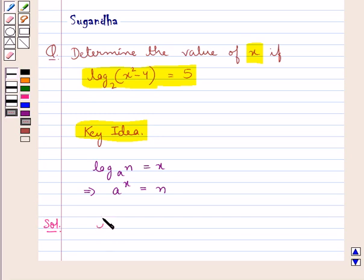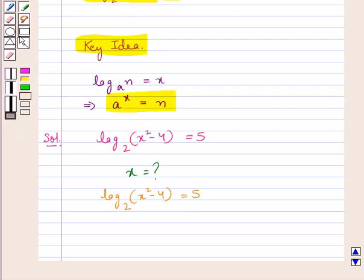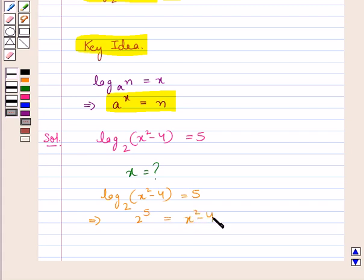We are given that log of x square minus 4 to the base 2 is equal to 5 and we need to find the value for x. Now, since we have log of x square minus 4 to the base 2 is equal to 5, so using the key idea, we get that 2 to the power 5 is equal to x square minus 4.